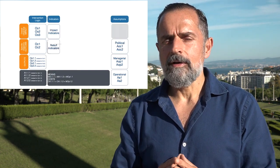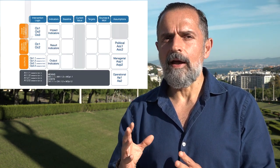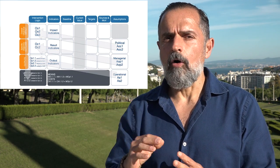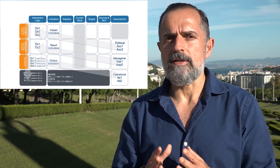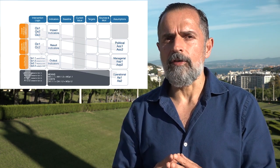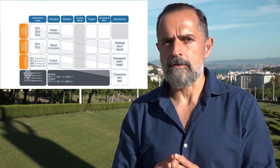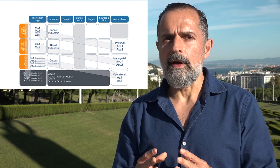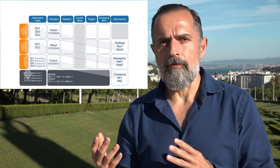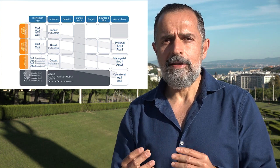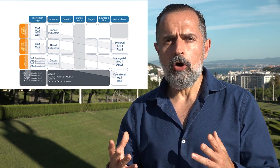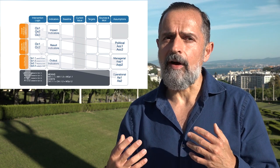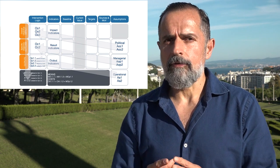The vertical one, the diagonal one made out of the assumptions, and the horizontal logic, which is precisely made out of the indicators. The indicators will be complemented by the corresponding sources of verification — the actual documents, websites, bulletins, and reports where I can find data on my indicators.